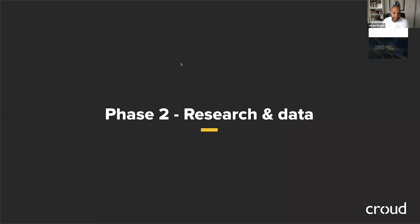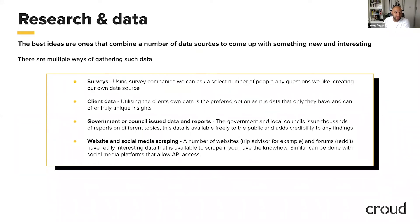Phase two is the research and data phase. There are varying ways to gather data for a creative asset. You can produce your own survey and ask a select number of people specific questions. You can use your own client data, which is usually the preferred option because it's data only you will have, offering truly unique insights. There are also government or council-issued data and reports, such as ONS reports, which are freely available and a credible data source. And of course there's website and social media scraping — sites like TripAdvisor or forums like Reddit can be really good places to mine for data.